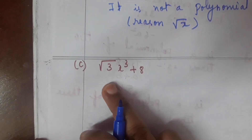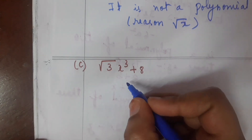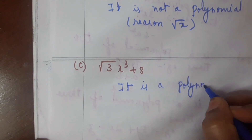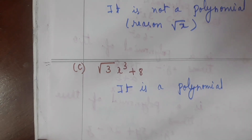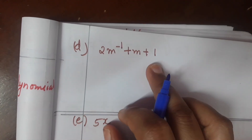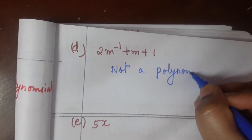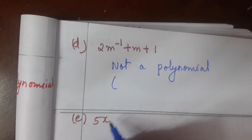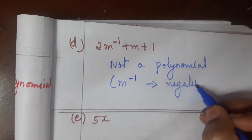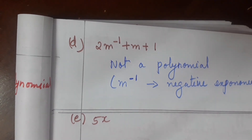Next: square root 3 times x cubed plus 8 — square root 3 is outside the variable, so it is a polynomial. Next: 2m to the power minus 1 plus m plus 1 — this is not a polynomial. The reason is m raised to a negative power — negative exponent — so it is not a polynomial.